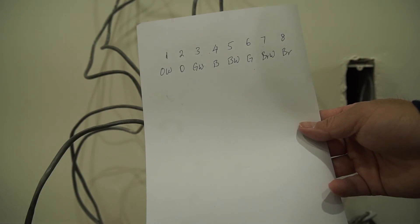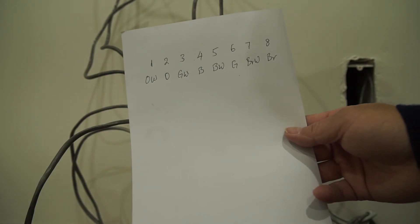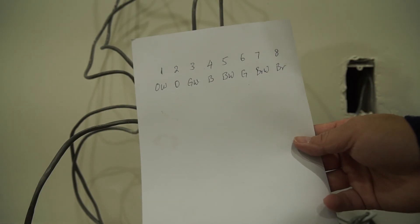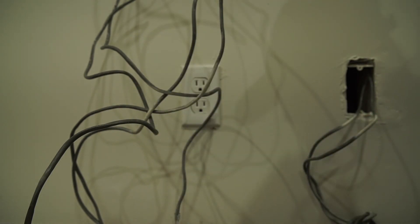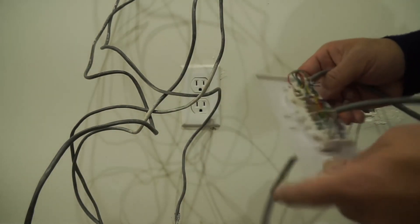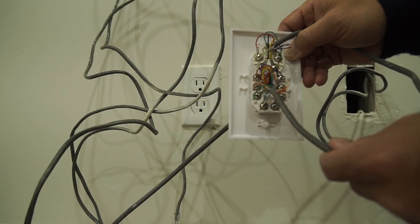Seven is brown white and eight is brown. So that should be the right color coding, and again, this is the way it should be.